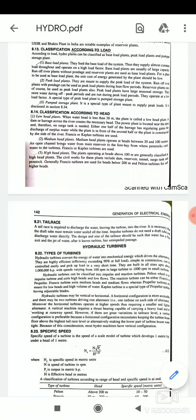Next classification is according to the head. Hydroelectric power plants can be classified into three categories according to the head: first is low head plants, second is medium head plants, and third is high head plants.